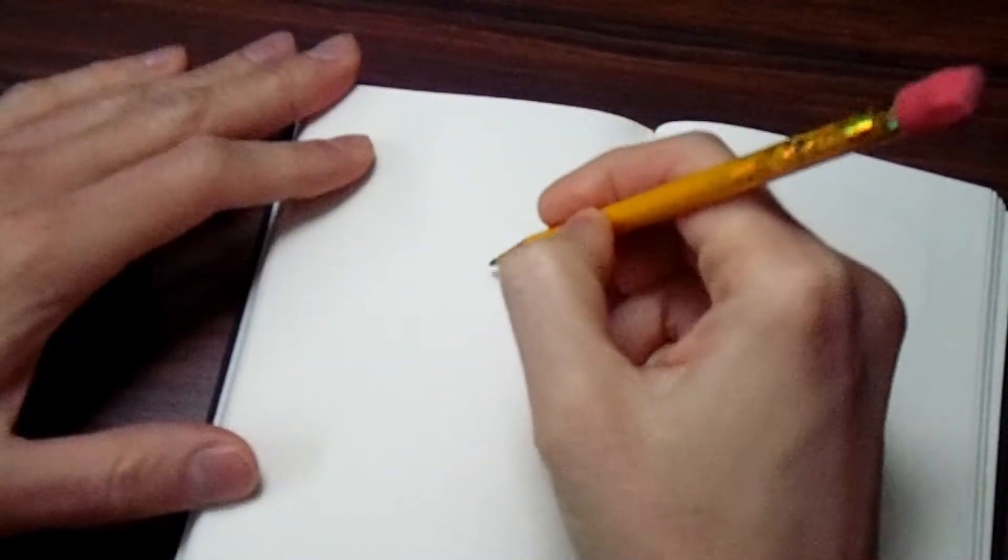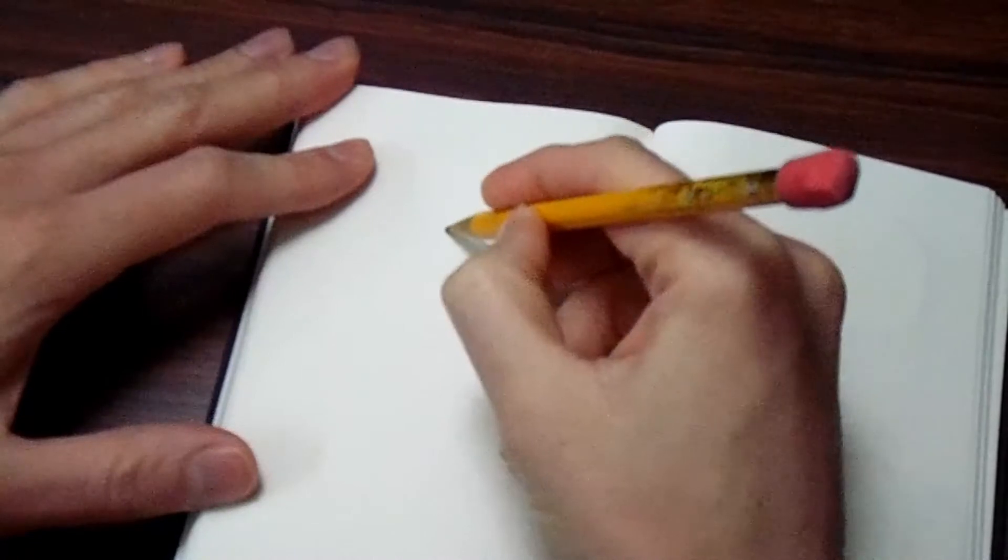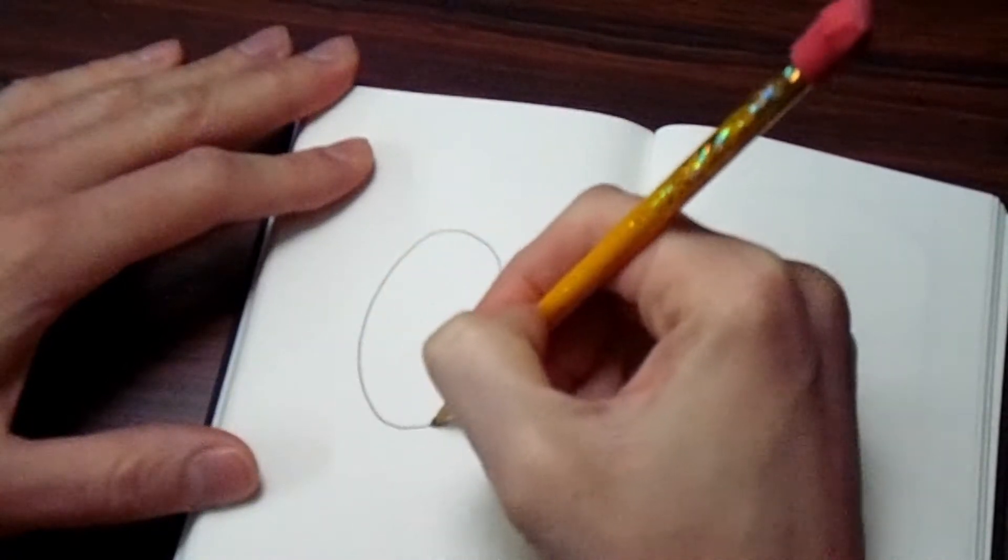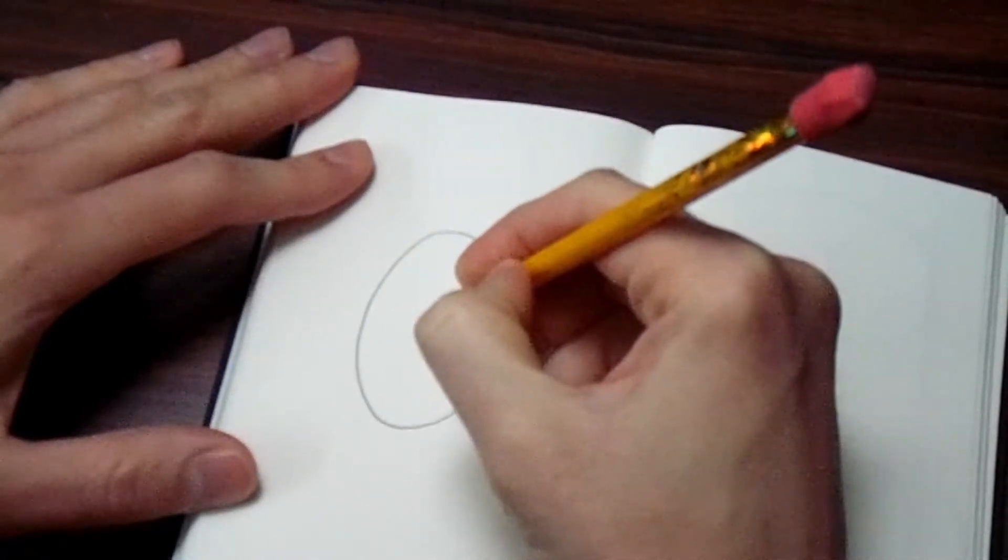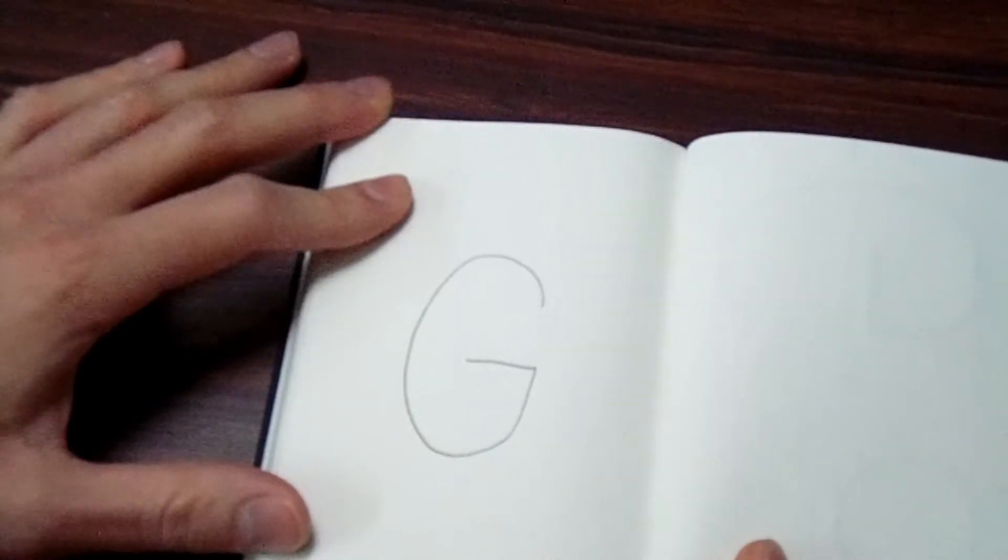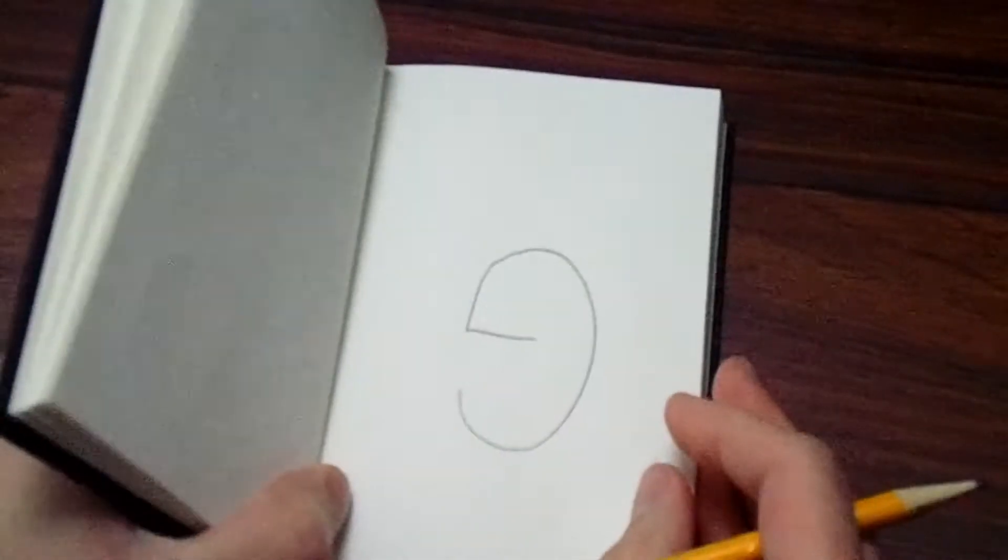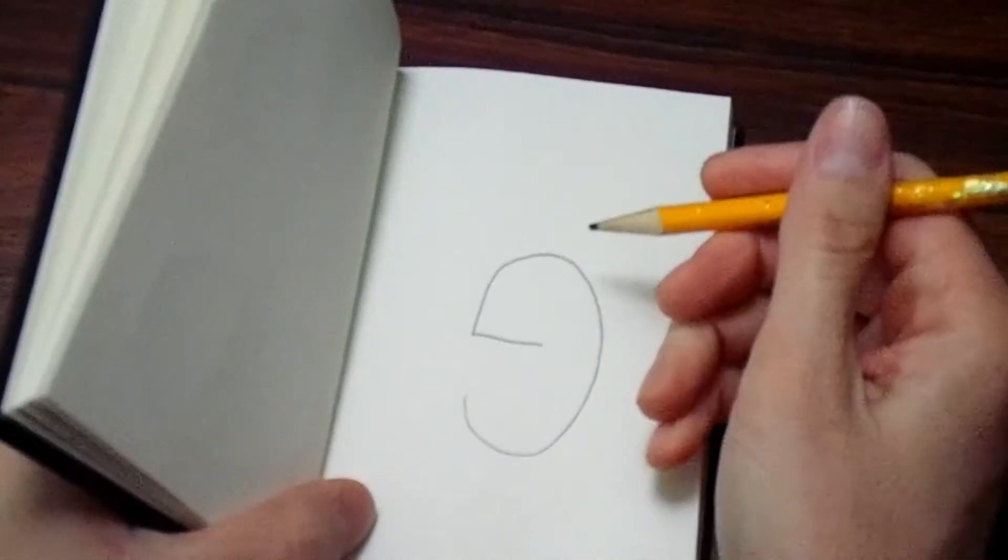So in the middle of our paper, we're going to make a capital G, which was our big curve that comes up and then a straight line into the middle. And there's our capital G, and then we're going to turn our paper right-side up, so now the G is upside down.